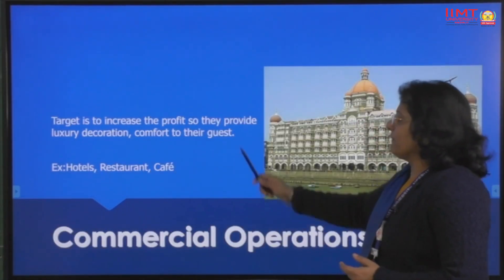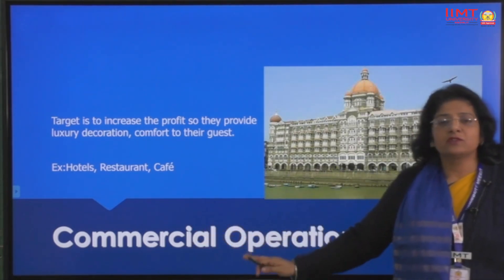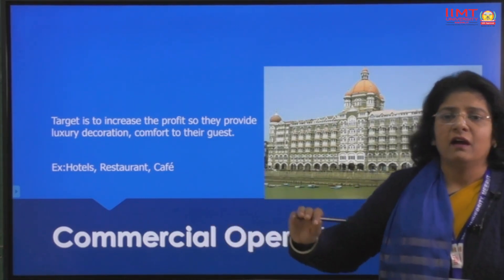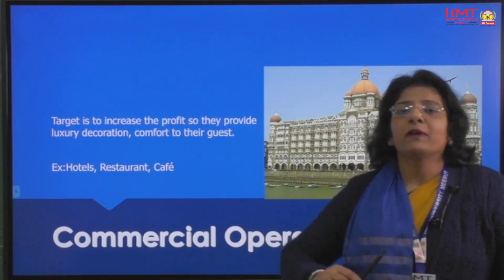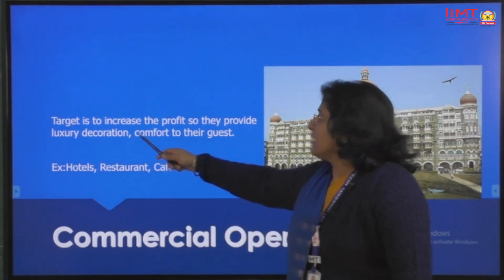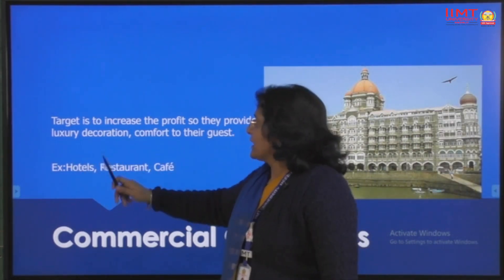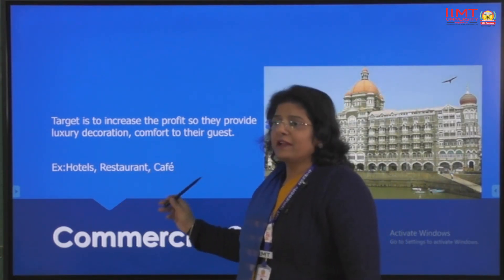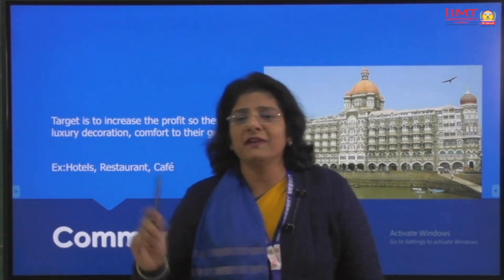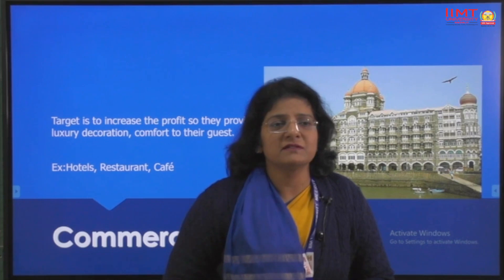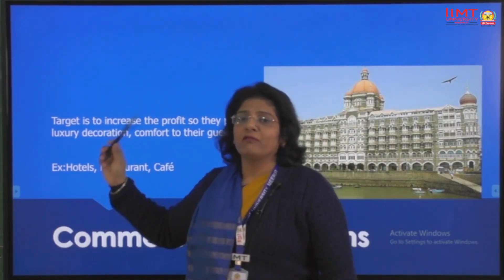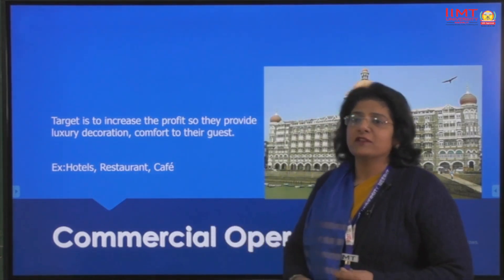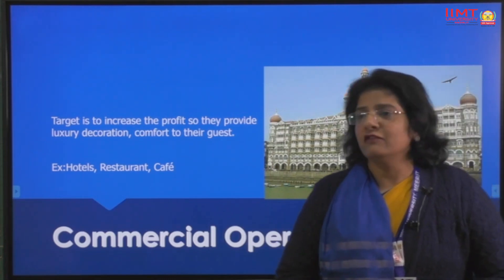Commercial operations are outlets run primarily for profit. Non-commercial or industrial operations sell food at very nominal, affordable prices. Welfare operations may not charge any amount at all. For commercial operations, the main objective is to earn more profit and provide luxury service to guests — offering comfort, luxury decoration, and making guests feel special. Hotels earn money through two sectors: accommodation (selling rooms) and food and beverage service.